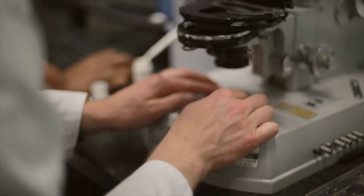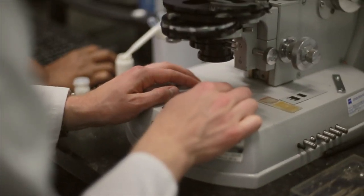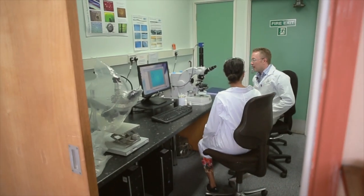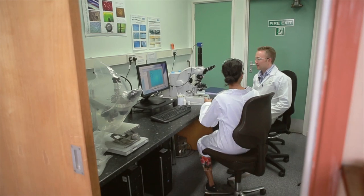Light microscopes are great for enabling us to observe many elements of the film formation process, but they don't enable us to see all of the particles. To image the dry films in even more detail, we need to use an electron microscope.